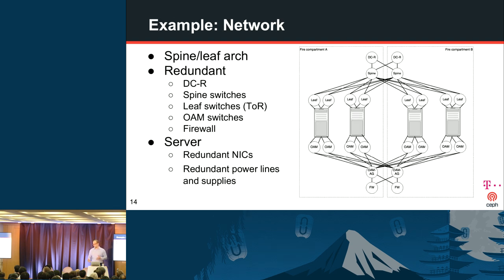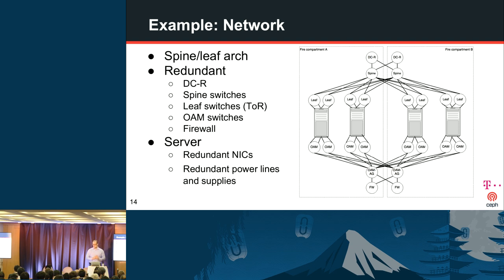As an example of what we do in our data centers, we use a spine-leaf architecture for our internal network — redundant leaf switches separated from management traffic, redundant spine switches and data center routers. Each server also has redundant NICs and redundant power lines and supplies.